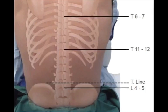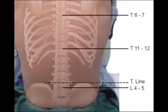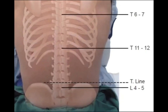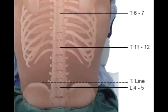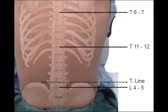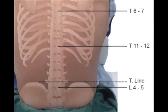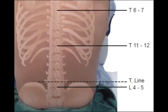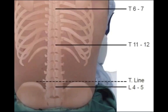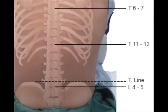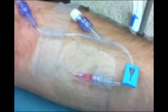Tracing the 12th rib back to its spinal attachment can be used to identify the 12th thoracic vertebrae. From these reference points, other levels can be identified by palpating and counting the spinous processes above and below the reference levels.